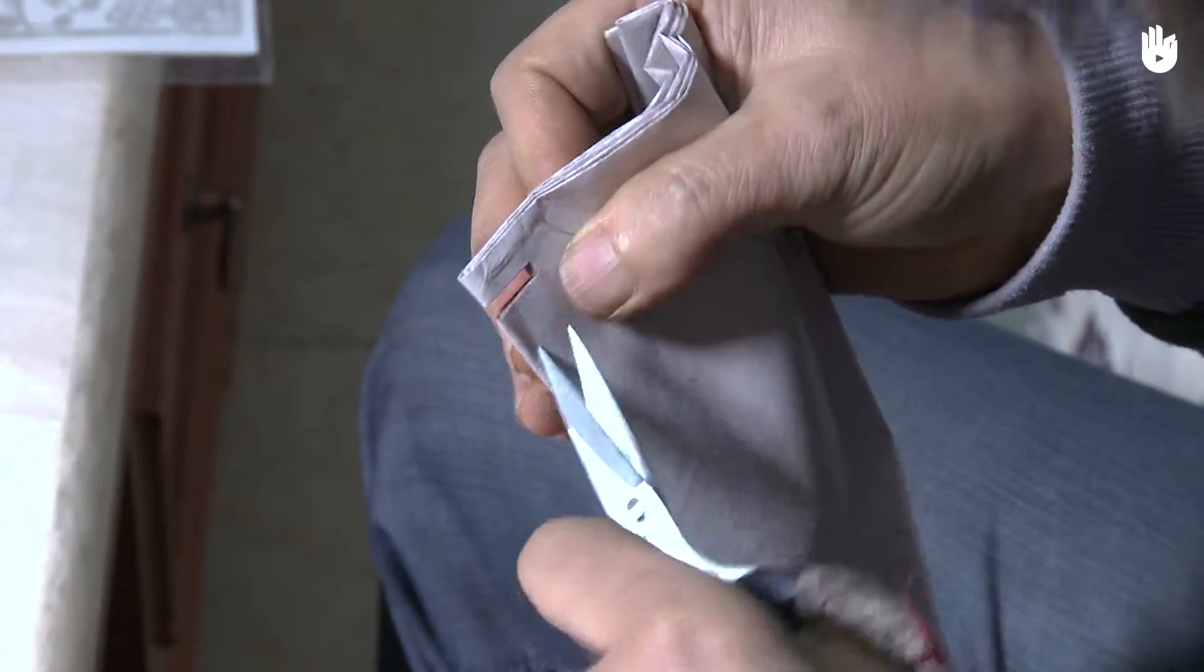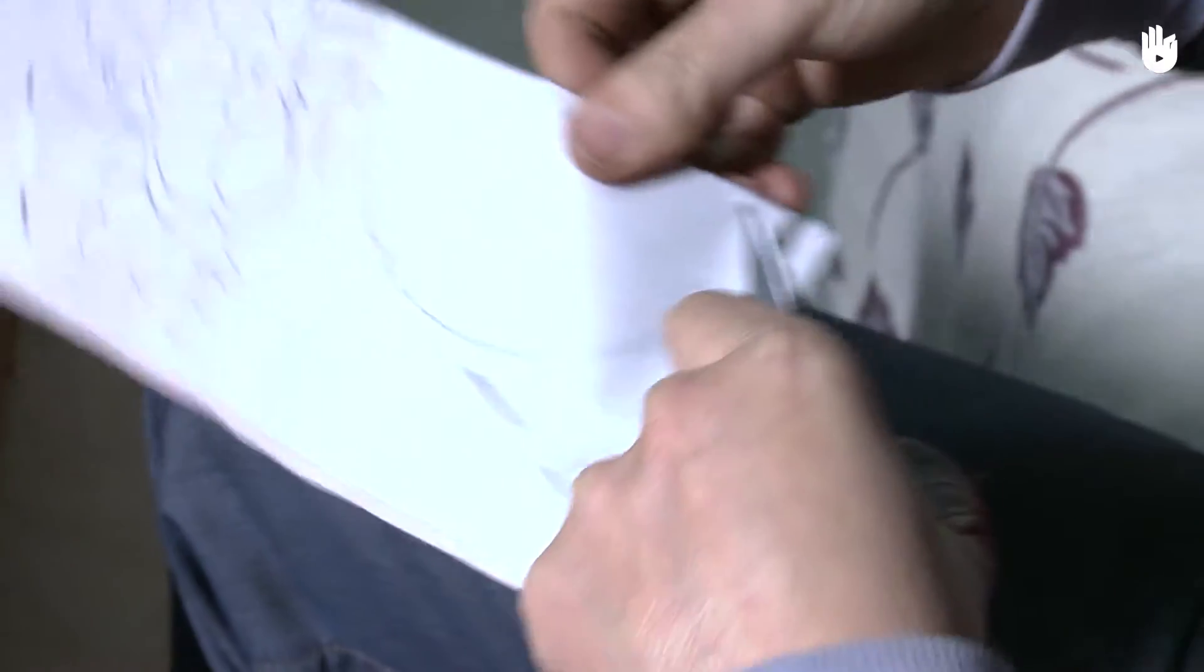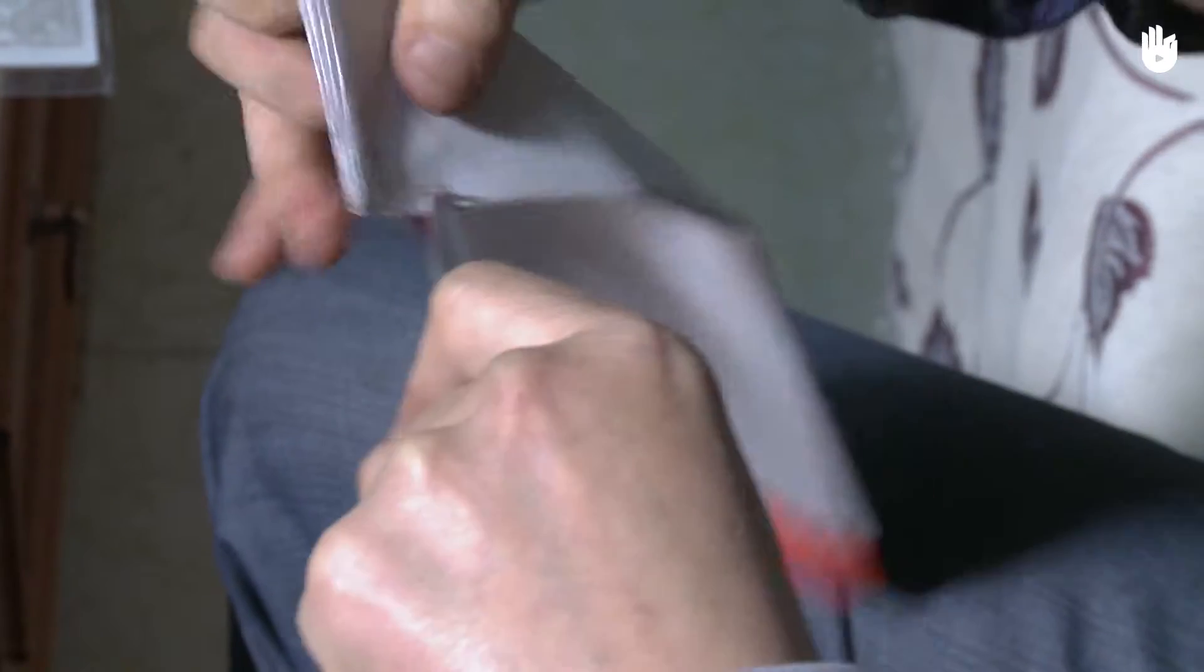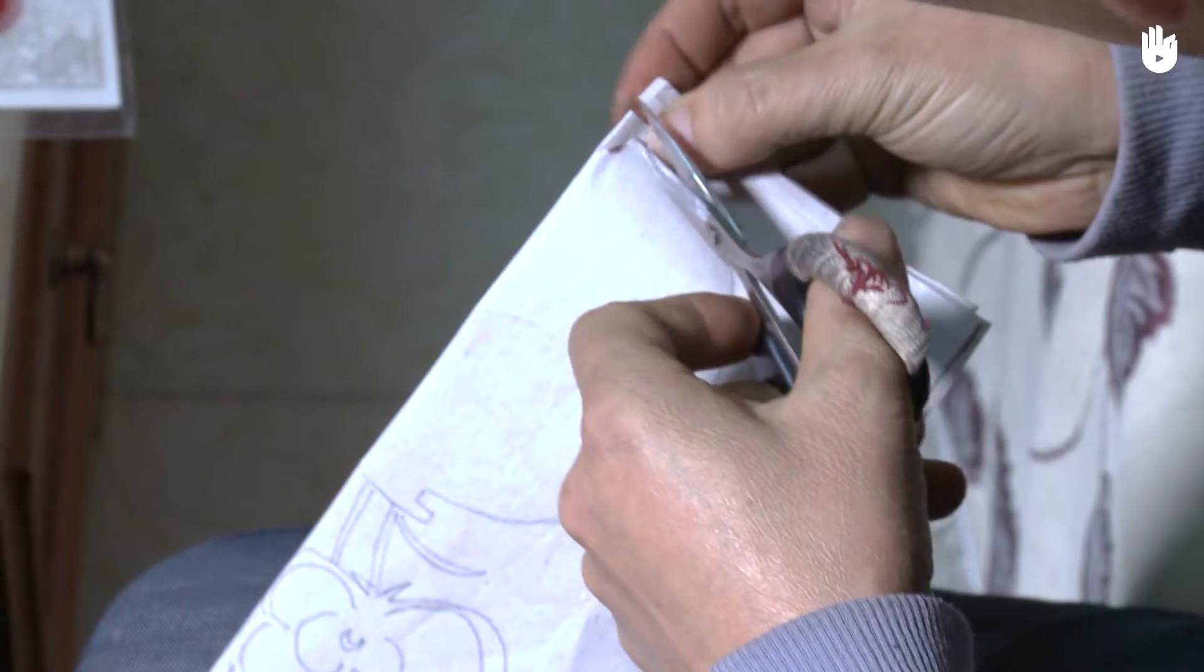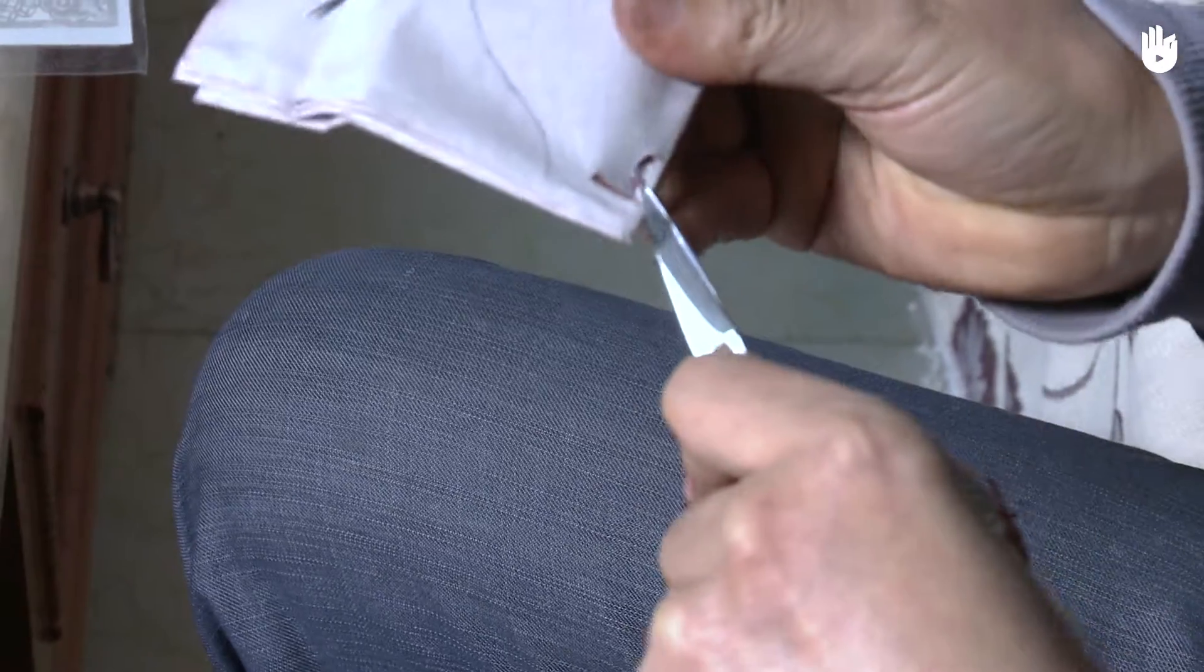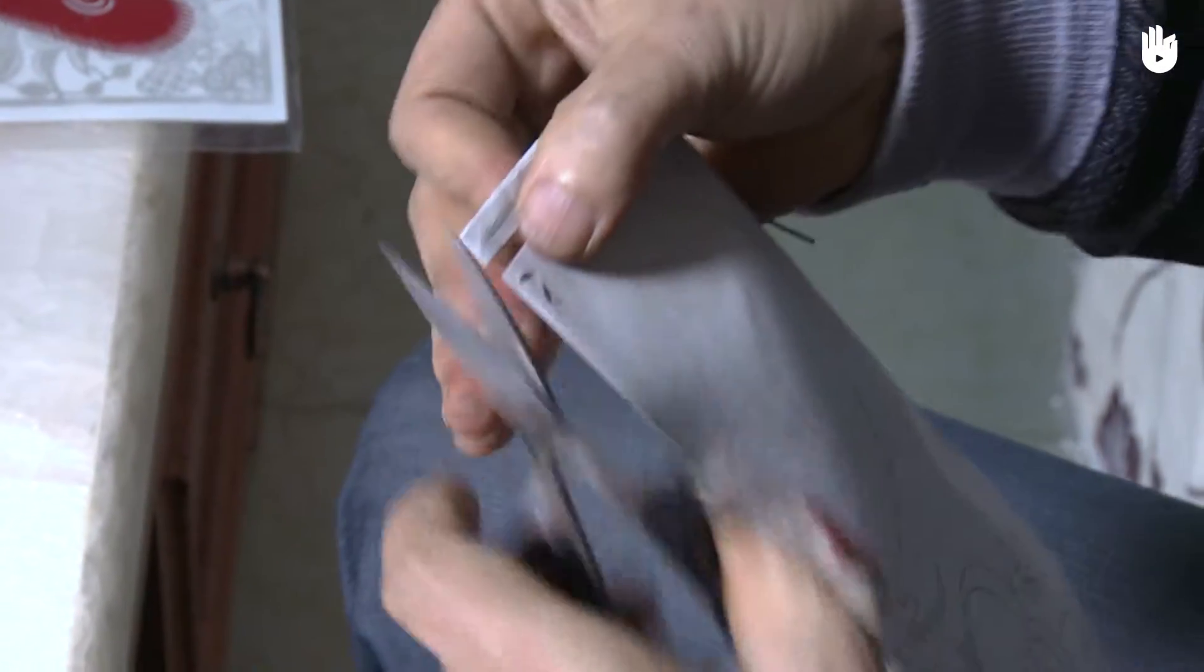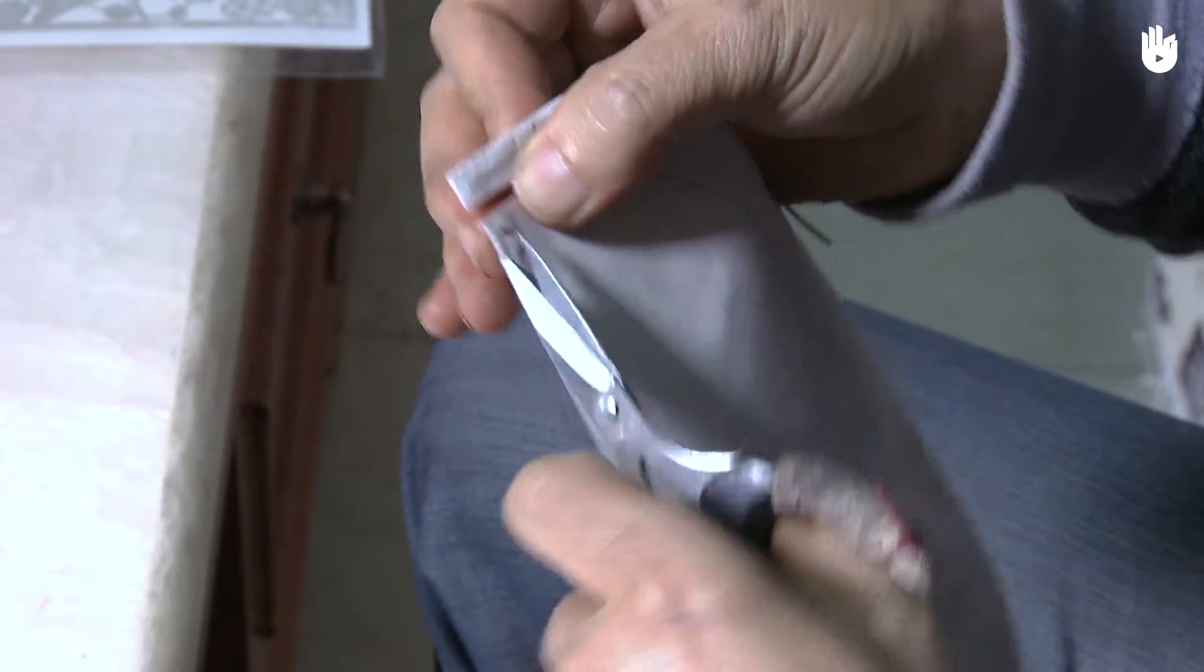Then pierce the paper with the tip of the scissors and make two small diamonds. Be sure to be precise. Then make a small triangle on the side.